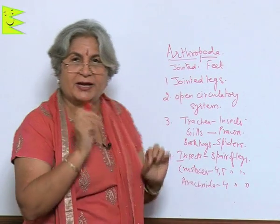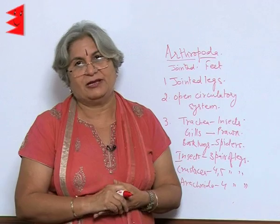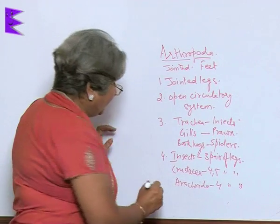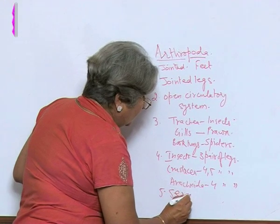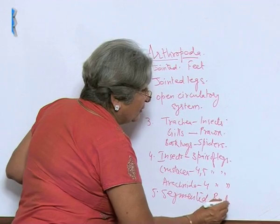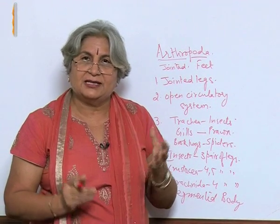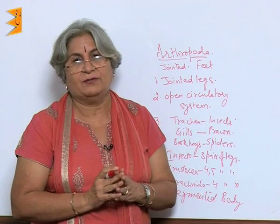The spider has four pairs of legs, while insects have only three pairs of legs, and their body is also segmented. Their body is divided into head, thorax, and abdomen. But in the case of prawns, the head and thorax are joined together to form cephalothorax.